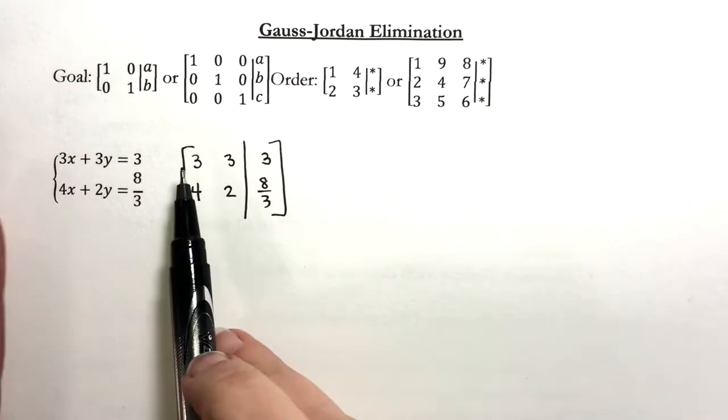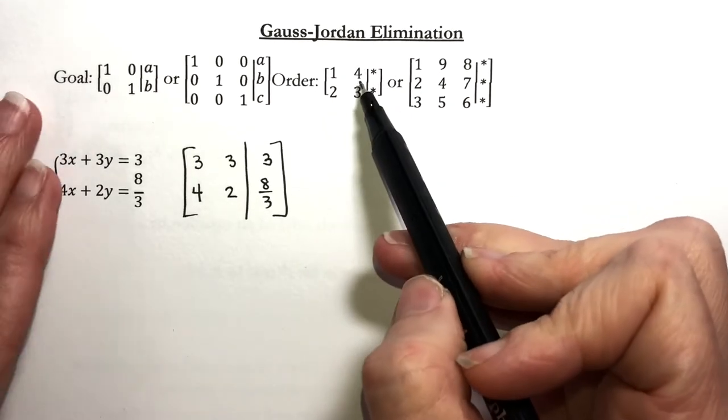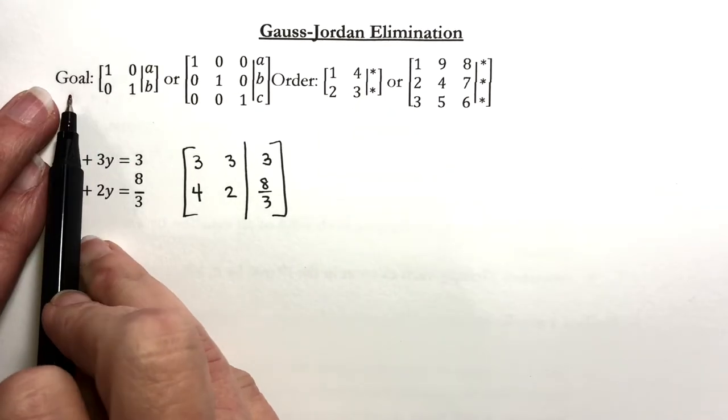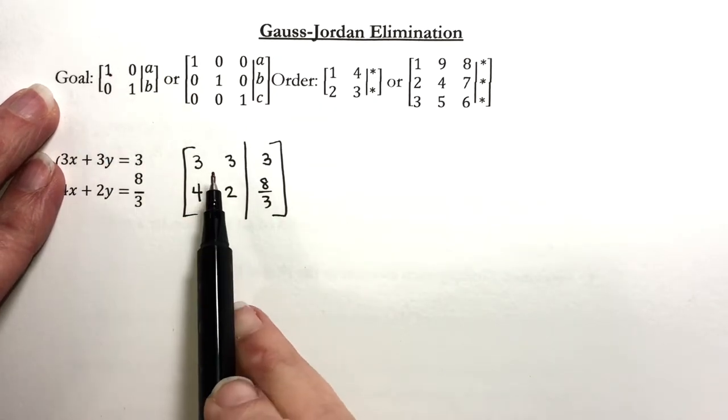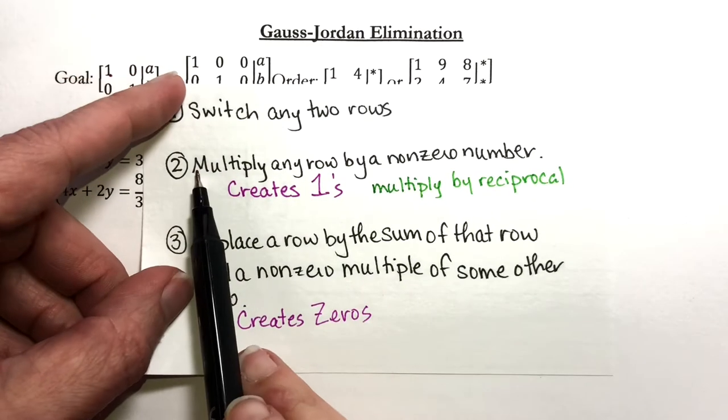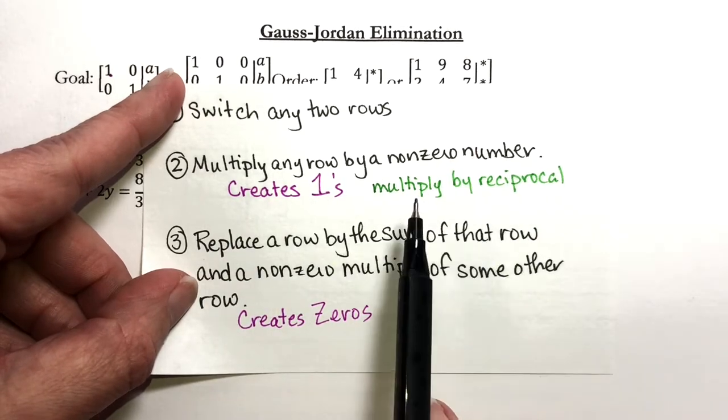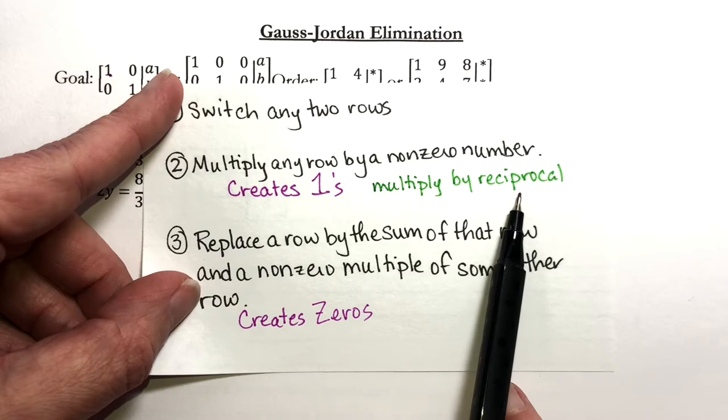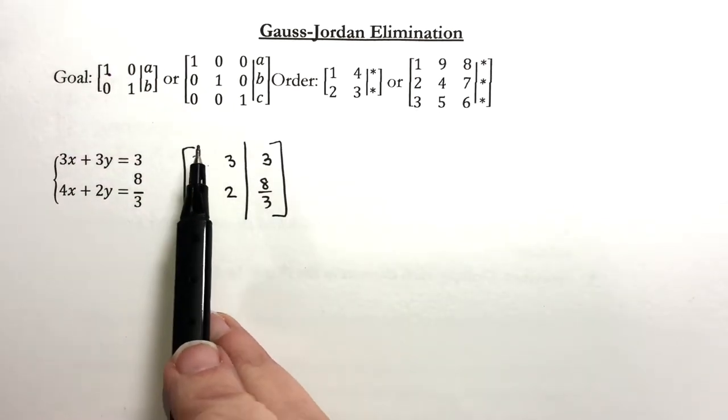Now the first step we need to do our first order. Again, I have the order done here to correspond with here. The first thing we need to do is to get a one in this position. Right now I have a three. How do we create ones? We create ones by using rule two. That just says we can multiply by any non-zero number and generally speaking, we're going to multiply by the reciprocal. The reciprocal of three is one third.